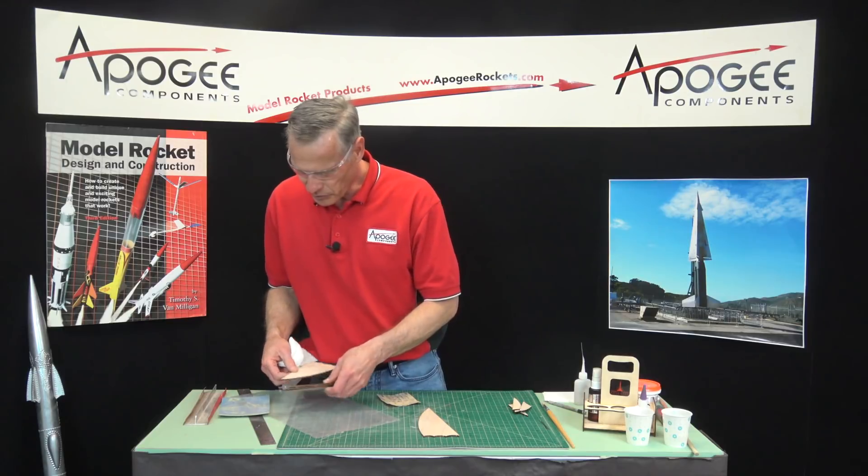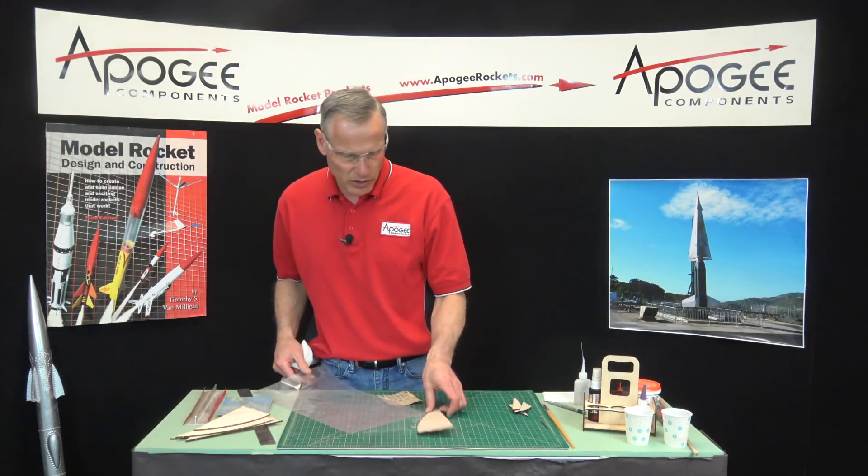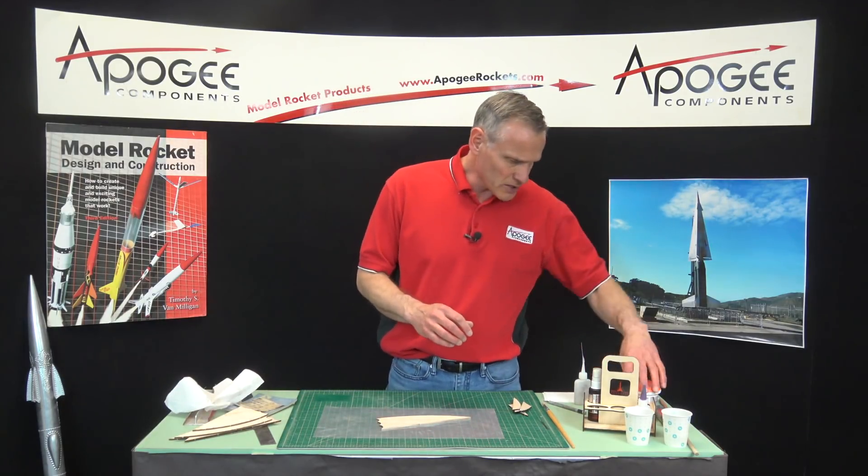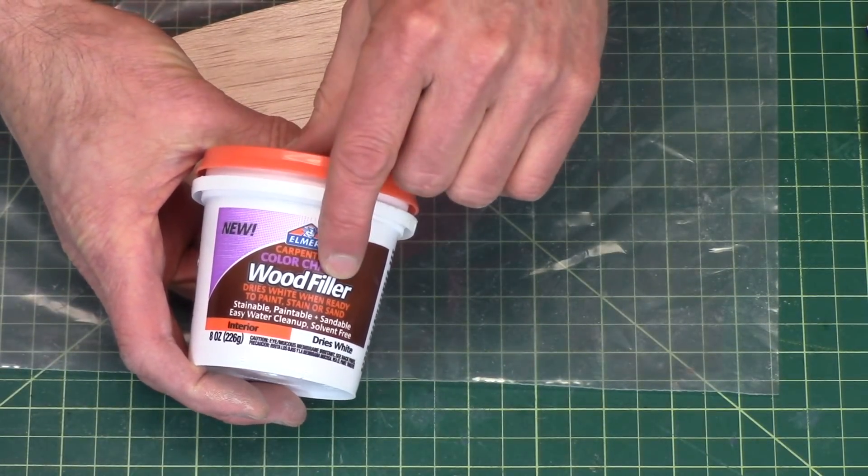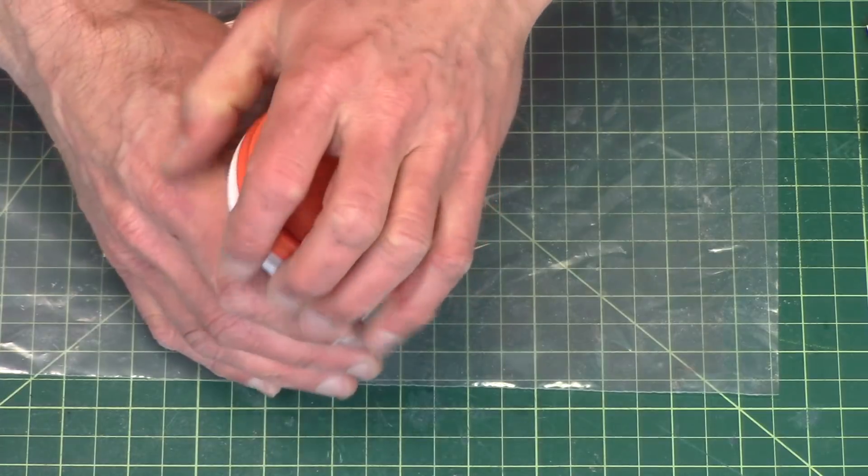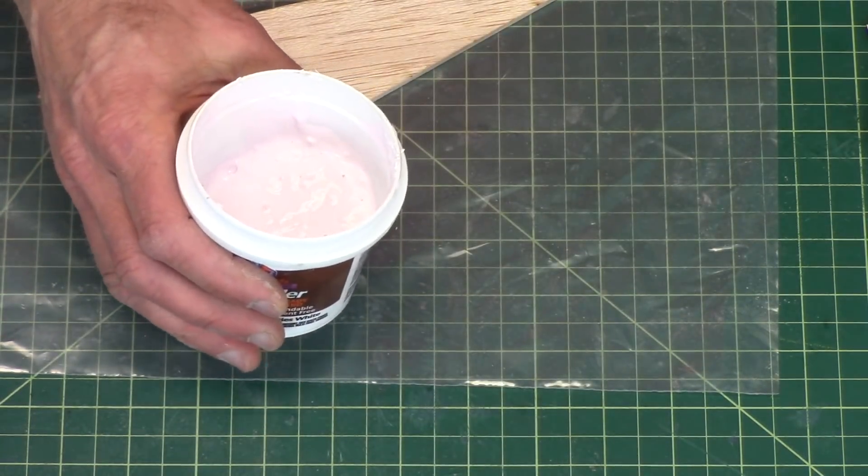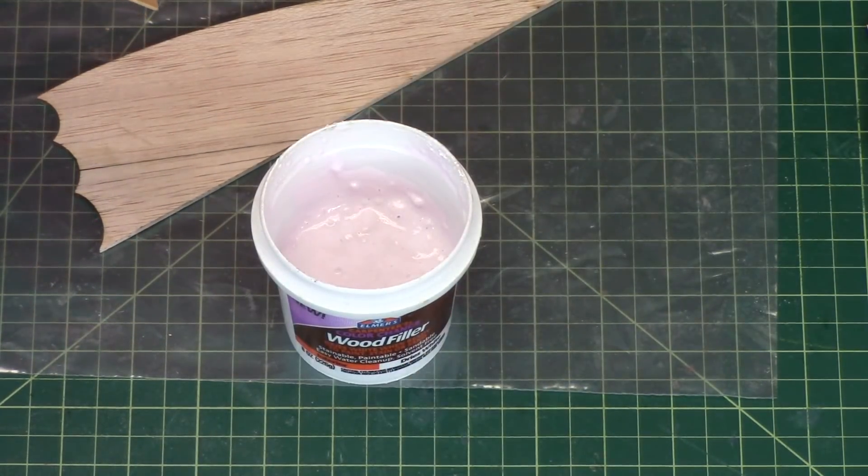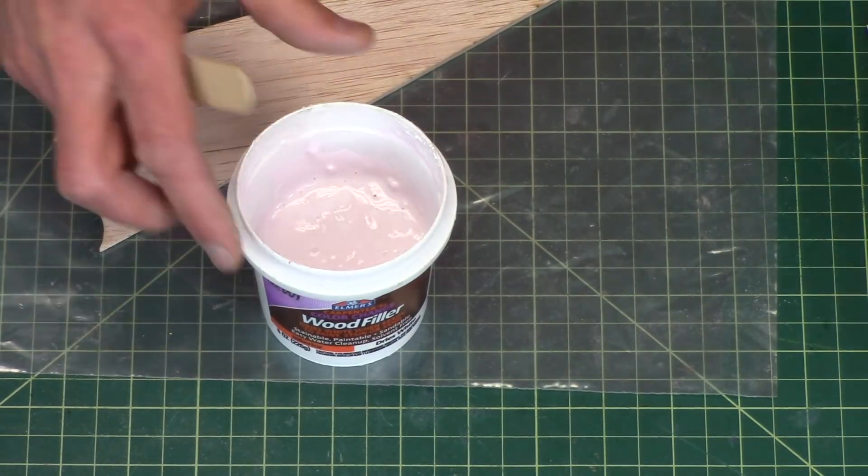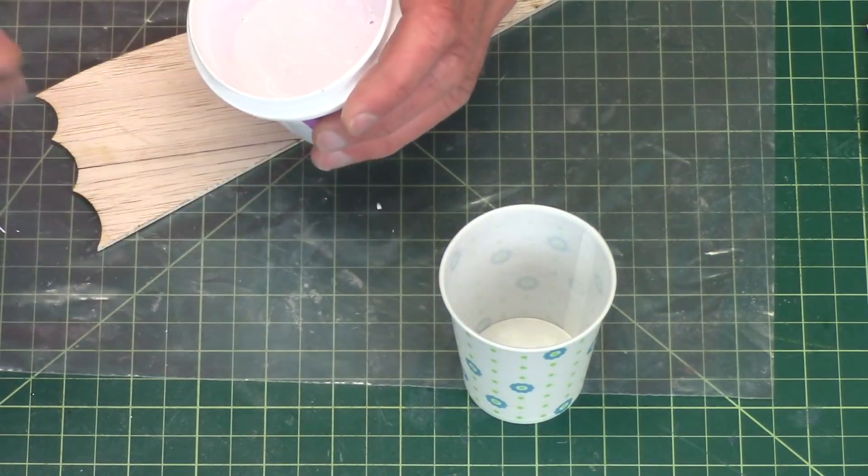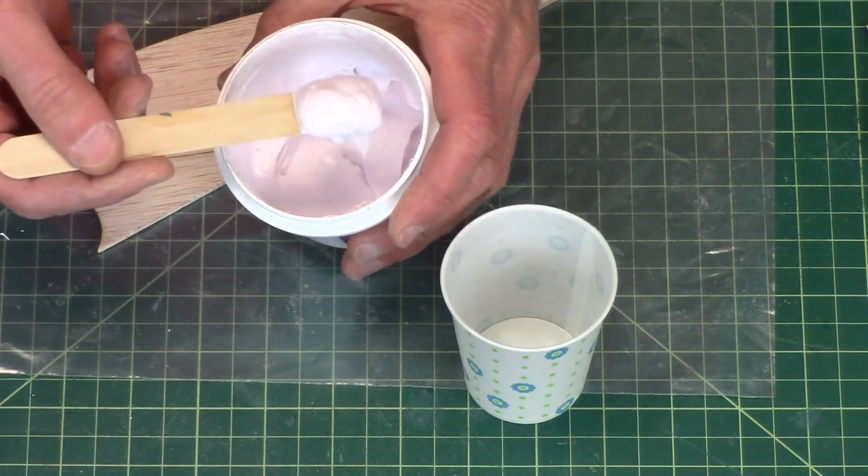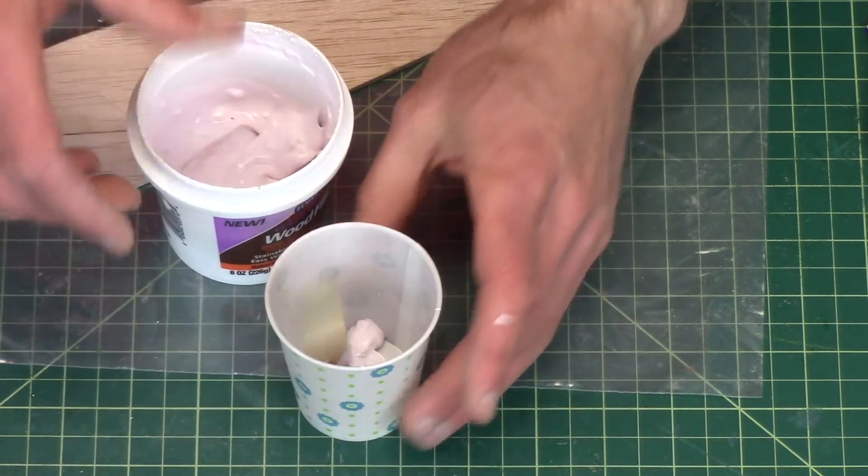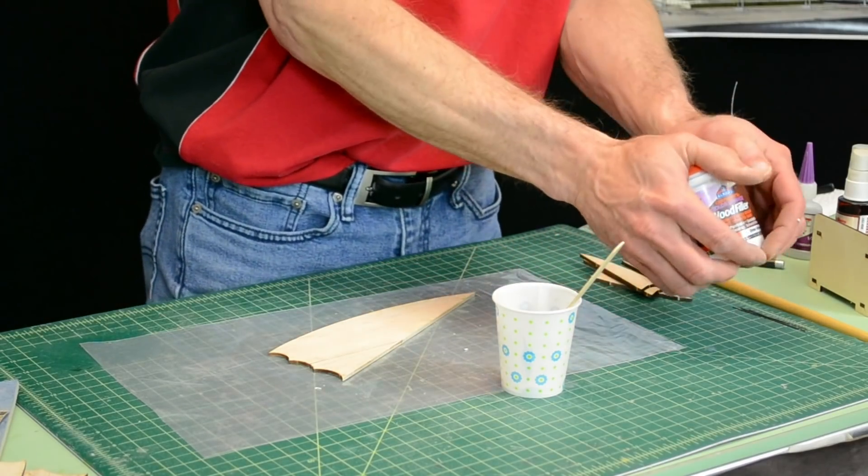Next I want to put the sanding sealer on. I'm going to put my plastic down again to protect the table. For this I like to use the Elmer's Carpenter's wood filler. It's a paste and the nice thing about it is you can thin it with water. I've already thinned it out a little bit. This is an old container, over a year old, and it'll dry out over time but you can put water back in and mix it back up.